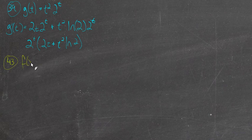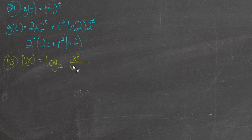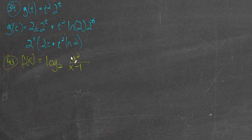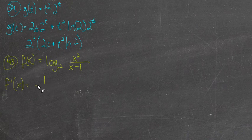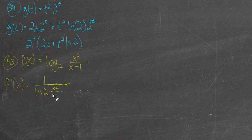Number 43. So now we have a logarithmic function — 2 as the base — of x squared over x minus 1. So we have the log base 2 of a function, and we're going to take the derivative of the log base 2 of this function, then use the chain rule to multiply by the derivative of this function. Flipping back to our list, f prime equals 1 over the natural log of the base, that's 2, times the function, which is x squared over x minus 1.